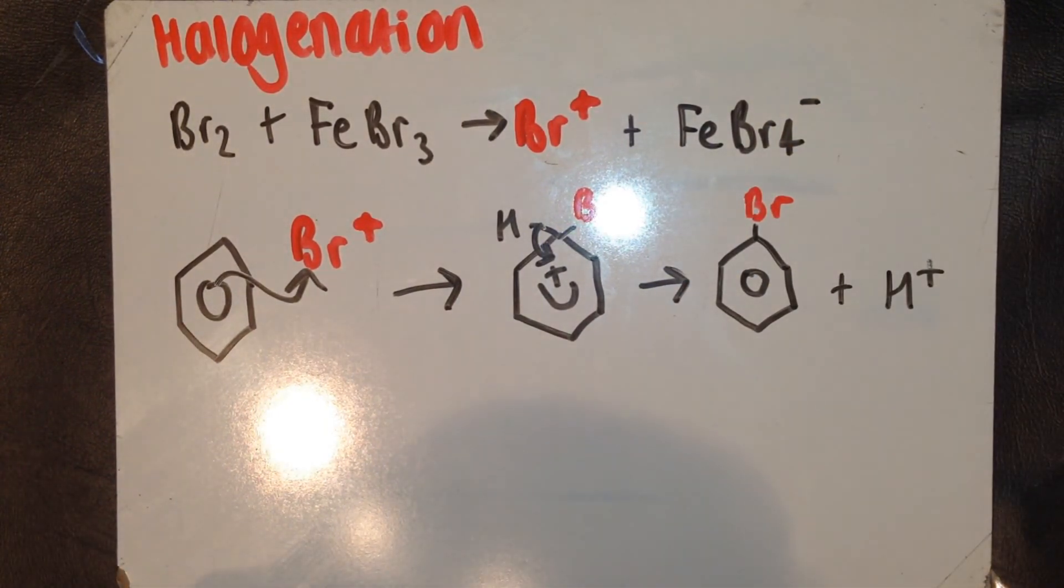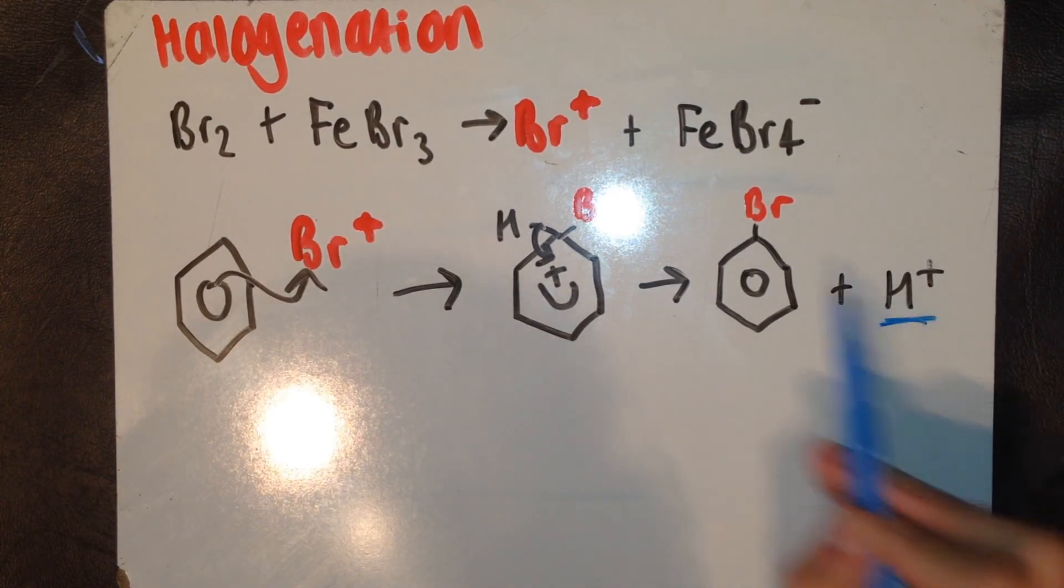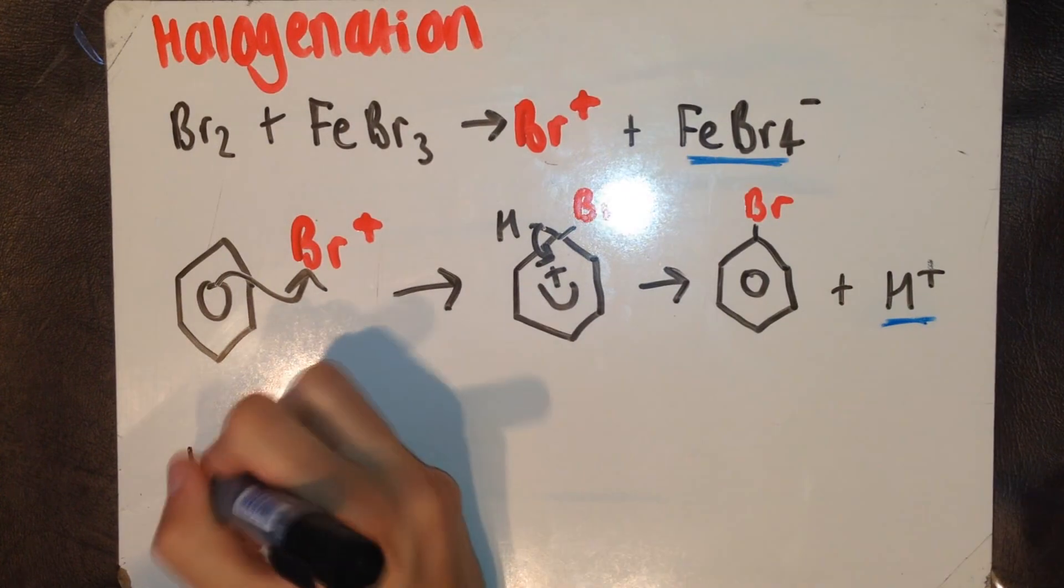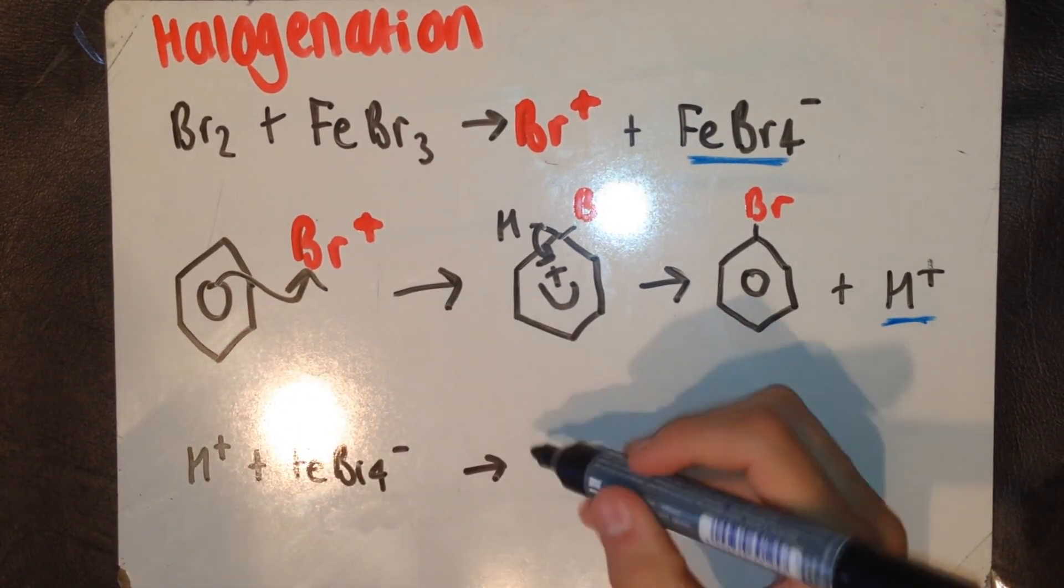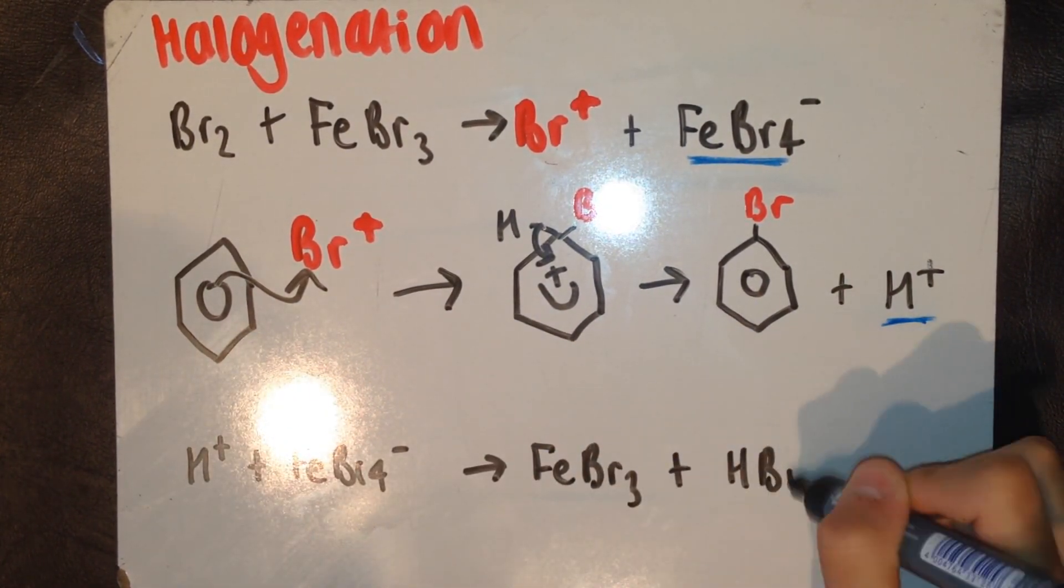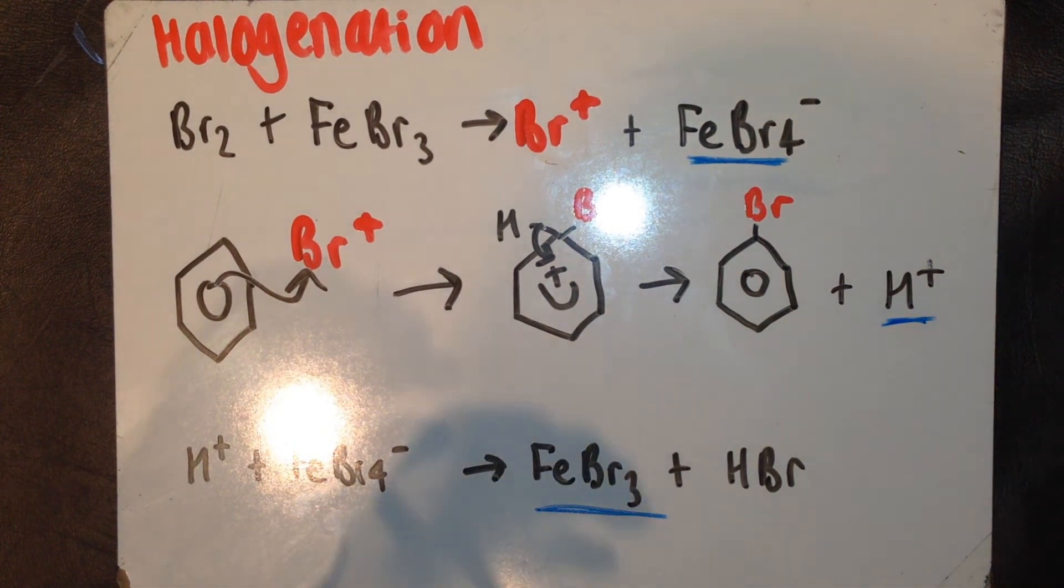But, once again, we haven't got the catalyst. We need to regenerate that. So, we're left with an H+ ion and an FeBr4-. Together, they form HBr. If you remember, that was the product in the initial equation I showed you earlier on, and iron-3 bromide, our halogen carrier catalyst, has returned.